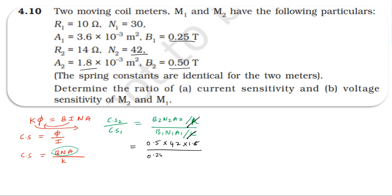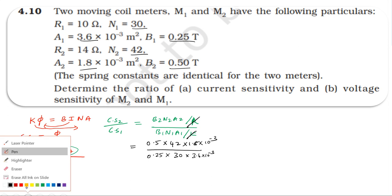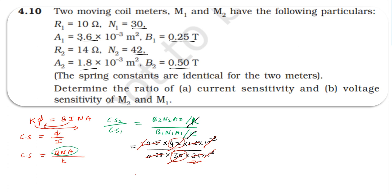The 1.8 and 3.6 cancel, 0.5 and 0.25 cancel to give 2, 2 cancels with 42 by 30 giving 42 by 30, which equals 1.4. So current sensitivity of second coil to first coil is 1.4.